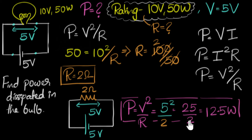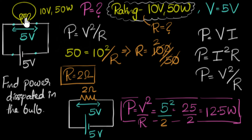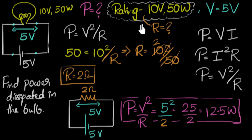That is the solution to our problem. As we predicted, the power dissipated in this bulb is less than 50 watts — it's 12.5 watts, so the bulb won't glow as bright as it should. To summarize: whenever we have problems like this, the first step is to always figure out the resistance of the bulb. The rating is always useful to calculate the resistance of that device, and then we treat it as a simple circuit problem and solve it.